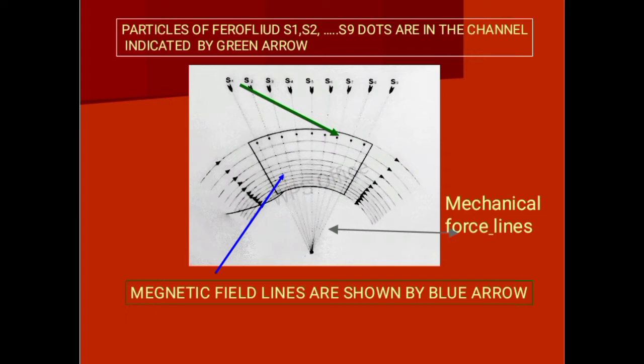S1, S2, S3, S4, S5, S6, S7, S8, and S9 are particles of ferrofluid. These particles experience force due to the magnetic field gradient and try to move towards the center. Their path of movement follows mechanical lines of force, and these lines are concentric.